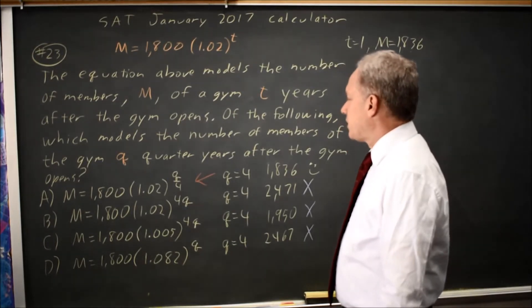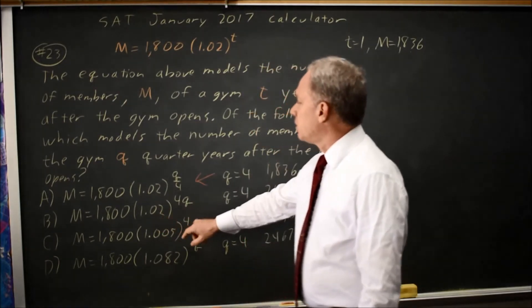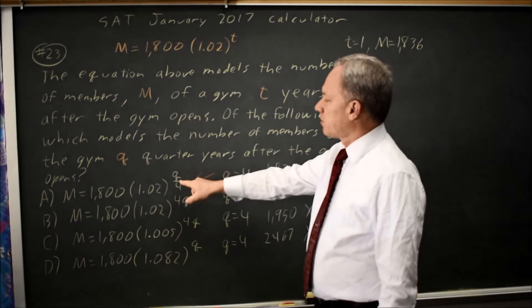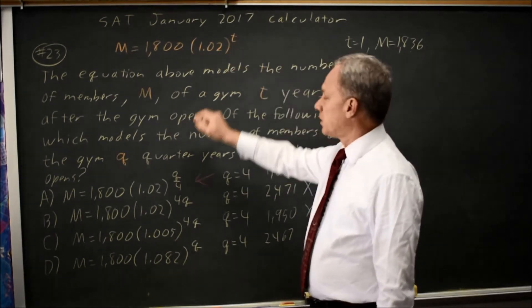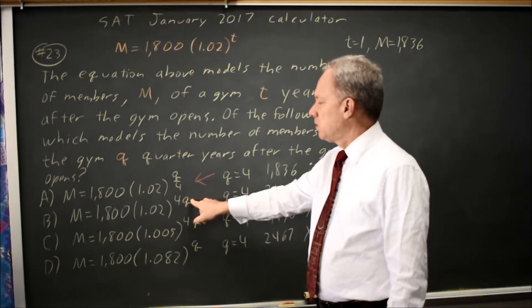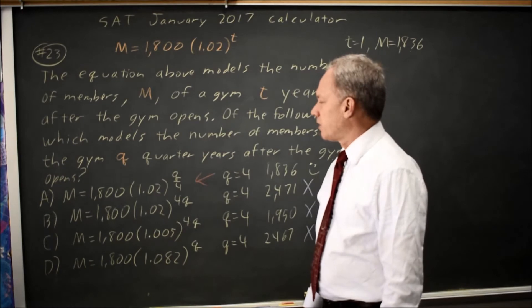Another way of looking at this: if choice A or B is correct, then at 4 quarters, which is 1 year, I want my exponent to be 1. q over 4 gives me 1, whereas 4q gives me an exponent of 16, which is the same as the growth at t equals 16 years. So that would be backwards. B would be wrong.